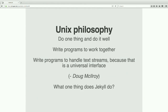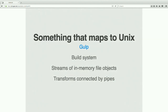I mentioned I would talk about Unix. The Unix philosophy says: do one thing and do it well; write programs that work together; write programs to handle text streams because that is a universal interface. This is a quote from Doug McIlroy, who invented the Unix pipe. My question is: what one thing does Jekyll do? You could say it generates static sites, but that's not one thing — because you could break it down into more: it renders markdown, it processes Sass, it builds stuff. It's not clear that it's one thing.